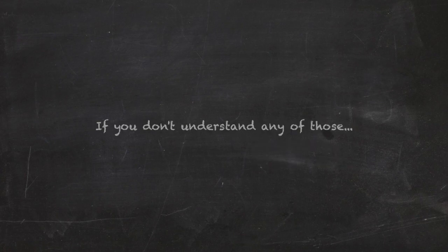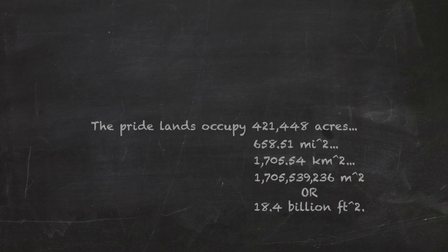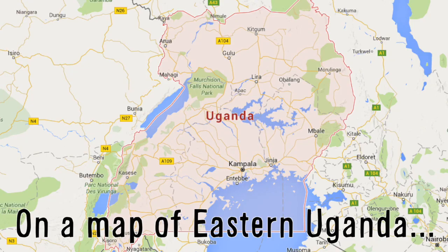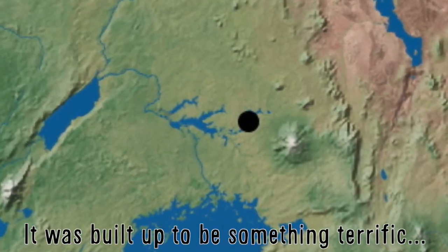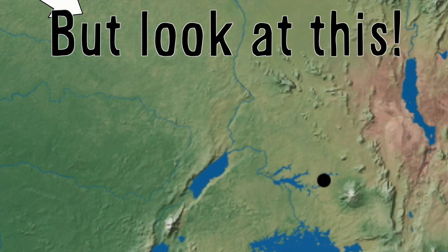If you don't understand any of those, then that number is about 1,705,539,236 square meters or 18.4 billion square feet. On a map of eastern Uganda, it looks like this. This is how much space the Lion King owns. It was built up to be something terrific, but look at this. This is pathetic.